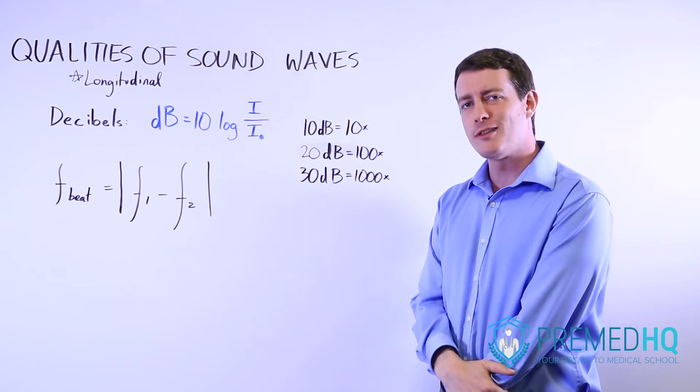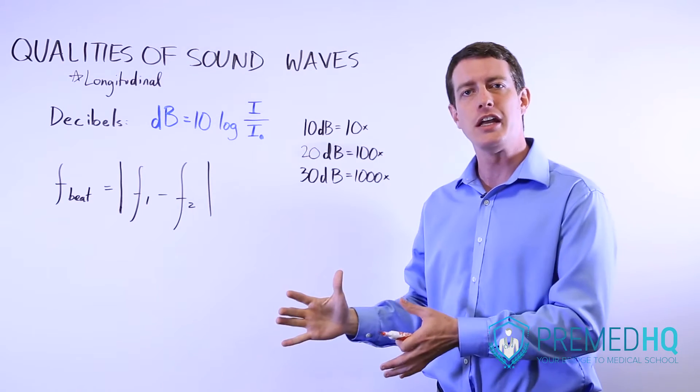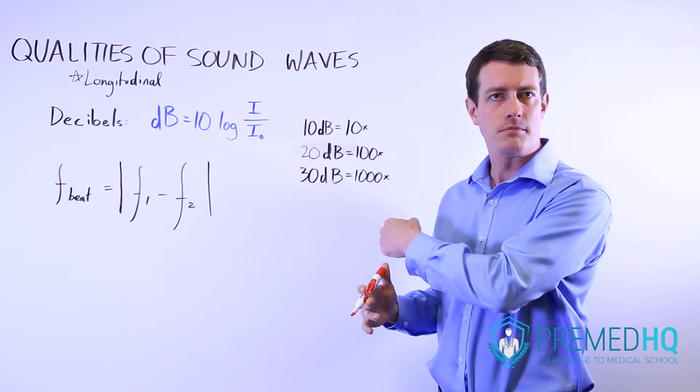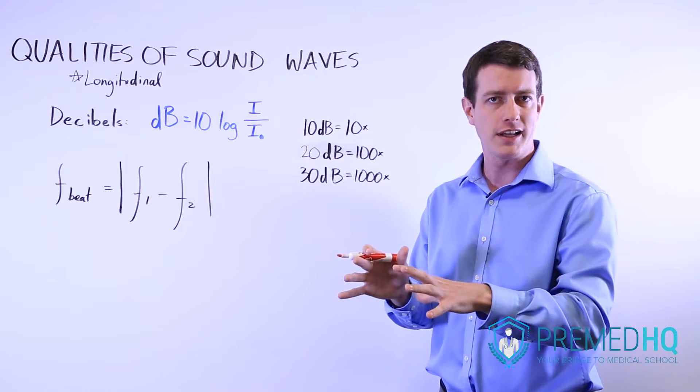Whenever you're working with logarithms, an increase in a logarithm of 1 means a tenfold change. But because we're using 10 times the logarithm, instead an increase of 10 decibels means a tenfold change.